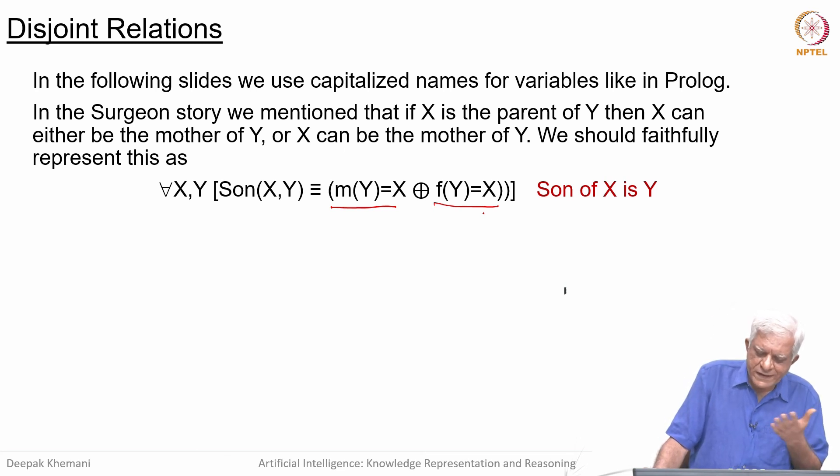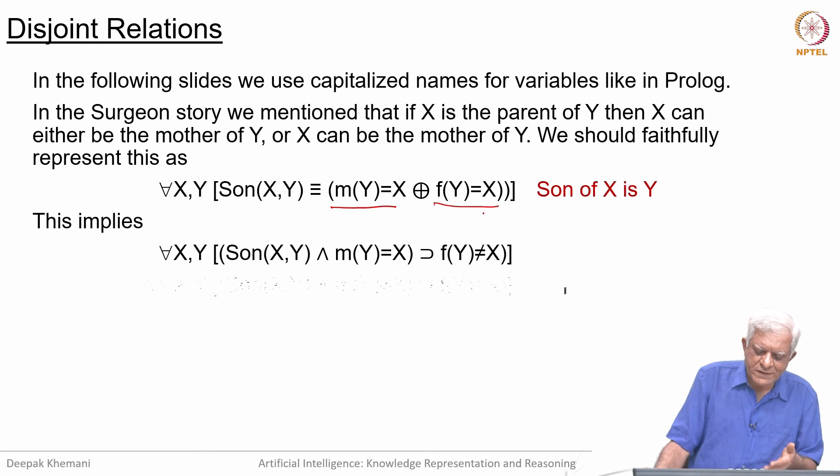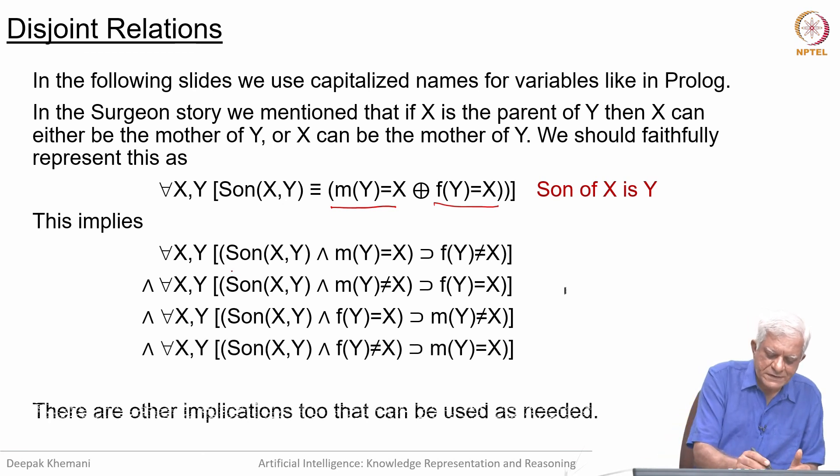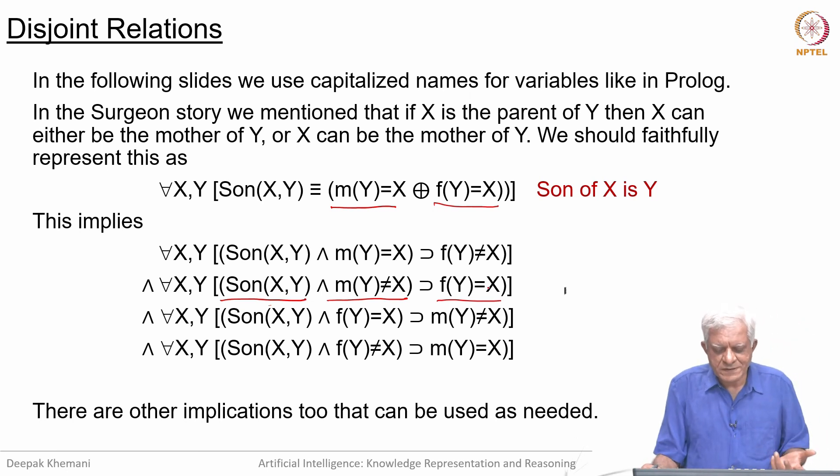As an exercise, I will ask you to take this expression in first-order logic and reduce it to clause form, which is what we use with the resolution method. You will see that this breaks down into a whole set of clauses, any one of which is a true statement. For example, one clause says: if the son of X is Y and X is not the mother of Y, then X must be the father of Y. You can make such inferences using this fact, which says you can be either the mother or the father.